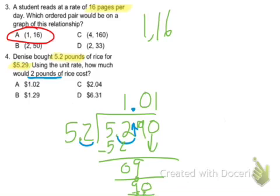So 52 goes into 380 seven times. And we can stop there because it's money. Because it's money, we need to round this 1. That 7 makes the 1 go up to a 2. So 1 pound is $1.02.